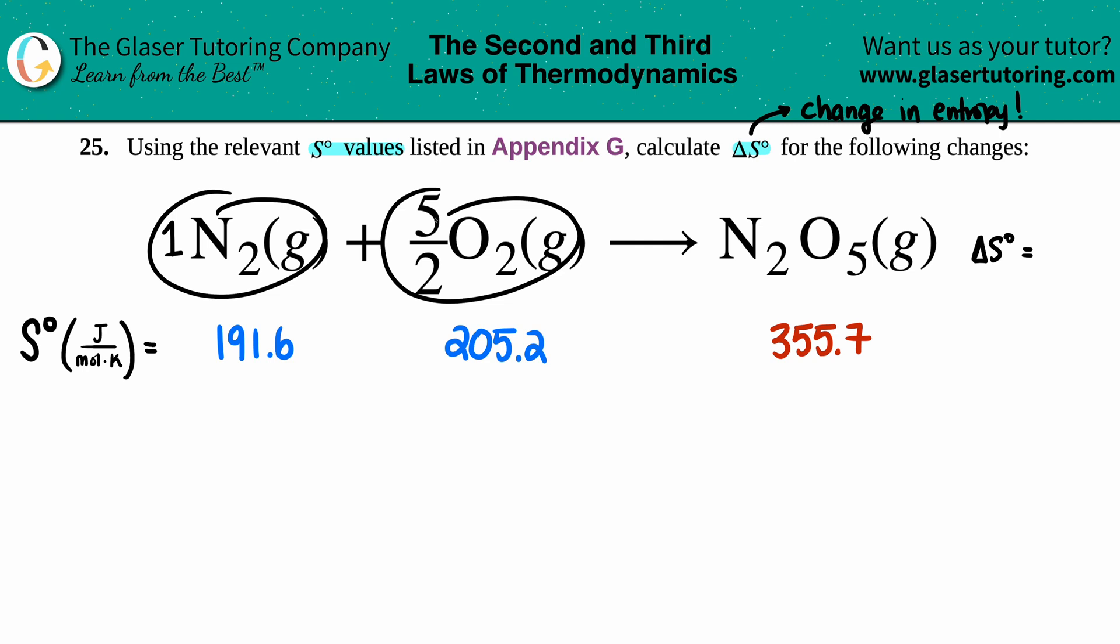You're only ending with one mole of product. Seems like you have more on your left side and you're going to something that is less in moles of gas. That sounds like less chaos, right? The more moles of gas you have, the more chaos. Since you're starting higher and ending lower, we could probably guesstimate this has to be negative.